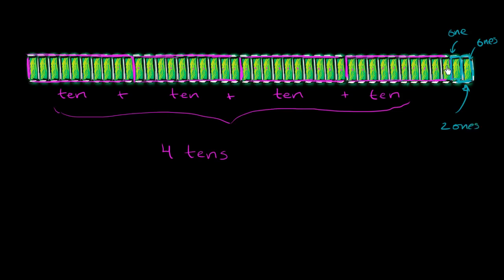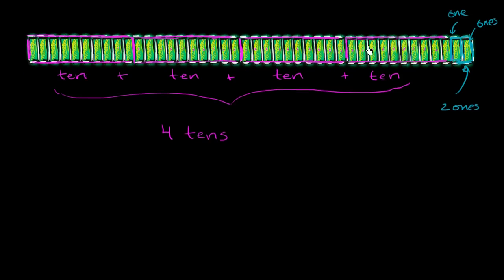Remember, each of these little green bars we said represents a 1. So this whole number is what? What's going to be the 4 tens. 1 ten, 2 tens, 3 tens, 4 tens plus the 2 ones. So let me write that down. So it is 4 tens plus 2 ones.